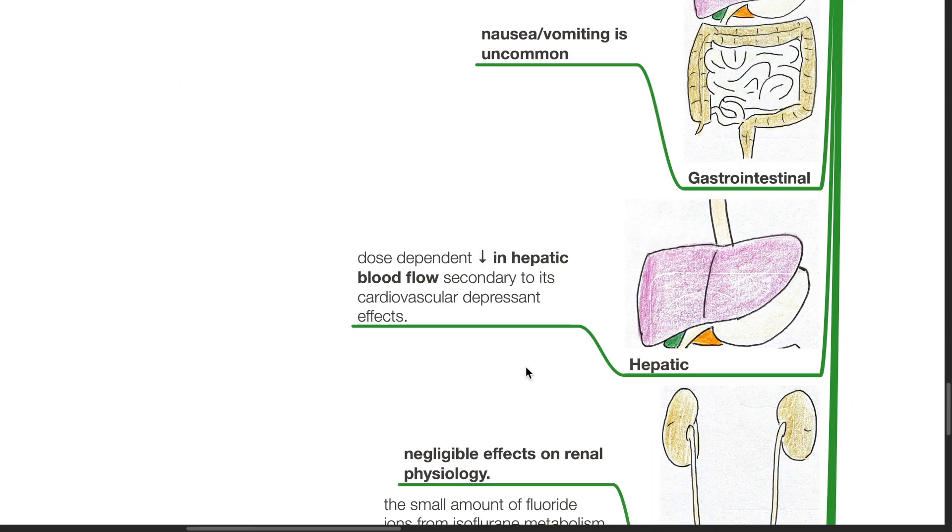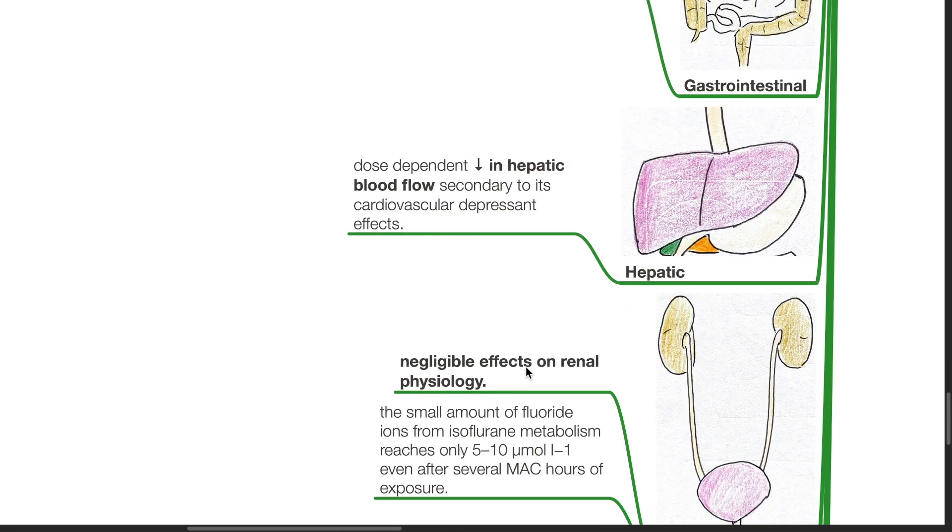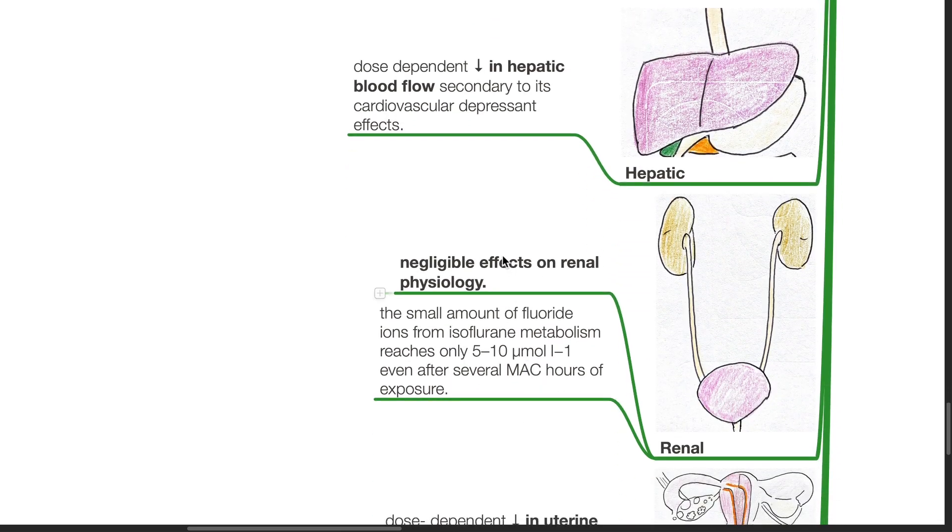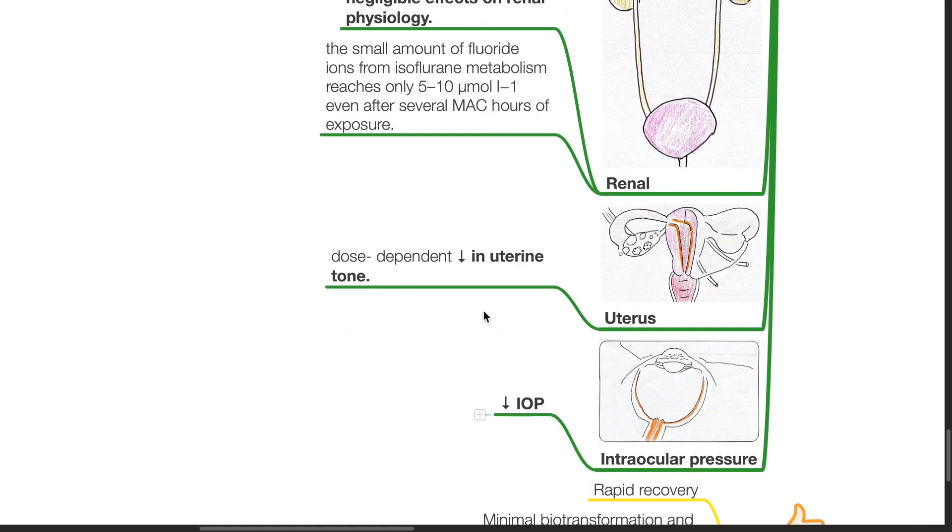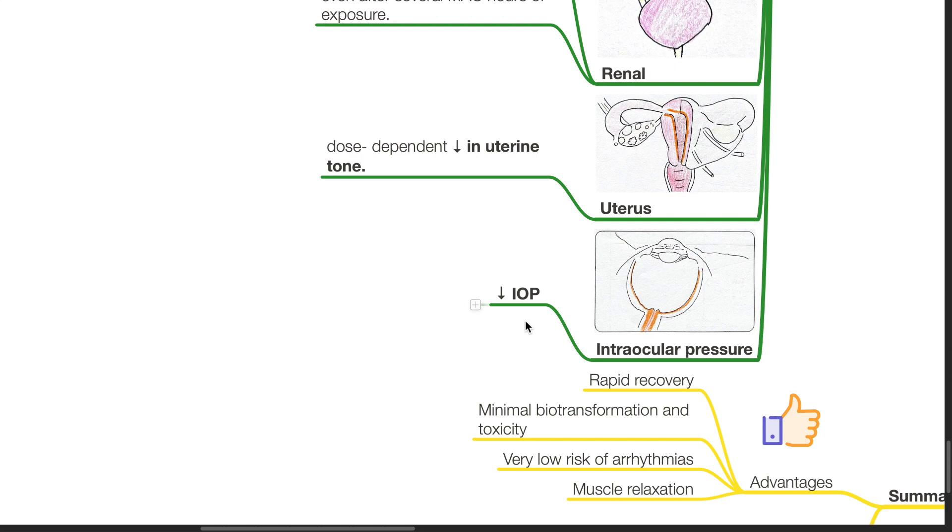There is dose-dependent decrease in hepatic blood flow secondary to isoflurane's cardiovascular depressant effects. Isoflurane has negligible effects on renal physiology. The small amount of fluoride ions from its metabolism reaches only 5 to 10 micromoles per liter even after several MAC hours of exposure. There is dose-dependent decrease in uterine tone and decrease in intraocular pressure.